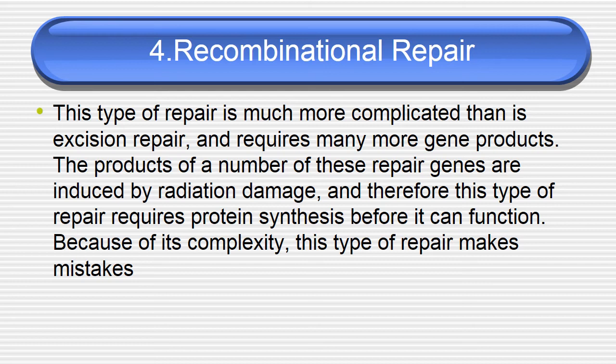The fourth type is recombination repair. This repair is much more complicated than excision repair and requires many more gene products. The products of a number of these repair genes are induced by radiation damage, and therefore this type of repair requires protein synthesis before it can function. Because of its complexity, this type of repair makes mistakes — meaning in recombinational repair there are more chances of committing errors.